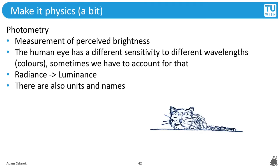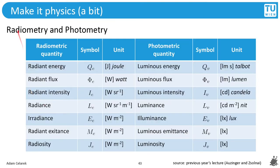Next we will see a bit about photometry. This is measurement of perceived brightness. The human eye is most sensitive to green light, then to red light, and least sensitive to blue light. This is why yellow light, which is a mixture of red and green light, is perceived brighter than blue light. In rendering, sometimes we have to account for that. Radiance is a physical unit while luminance is a photometric unit. There are also units and names. This table gives you an overview. We will not go through all of these, but look at Talbot, it's an interestingly named unit.